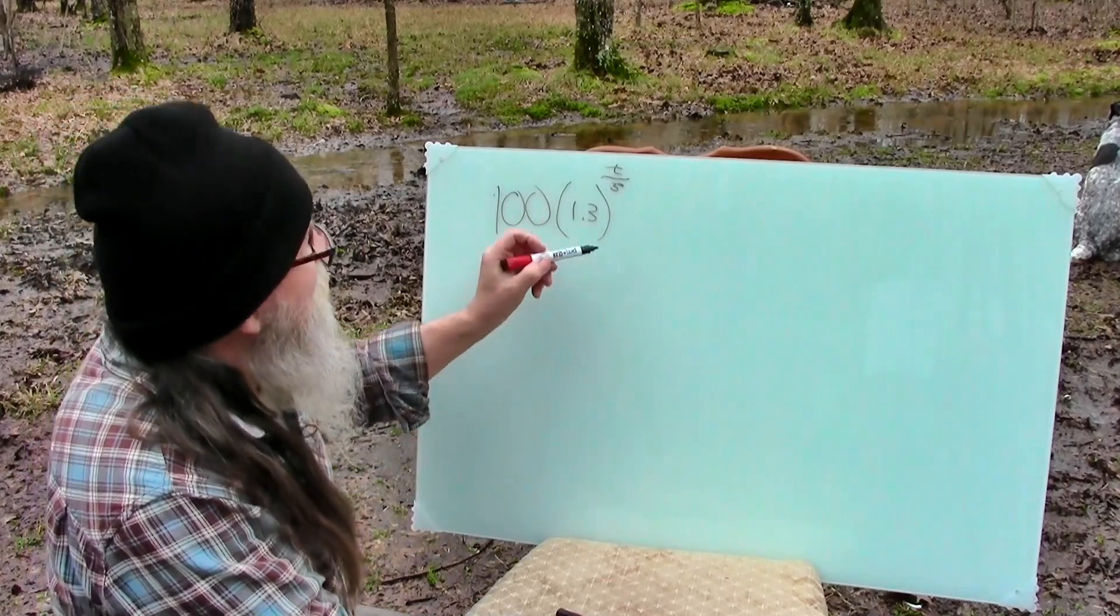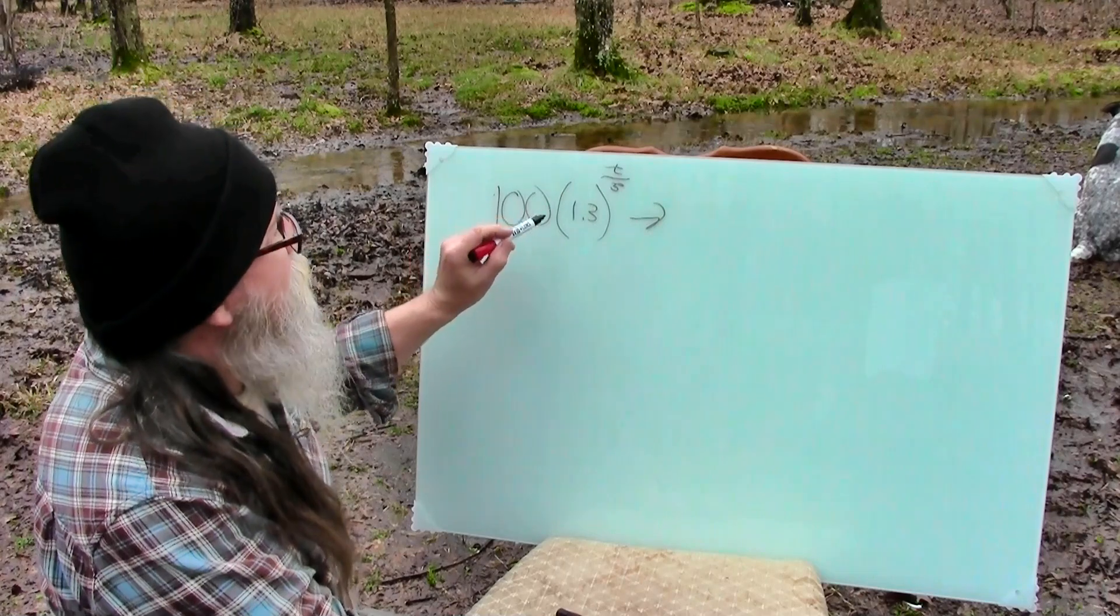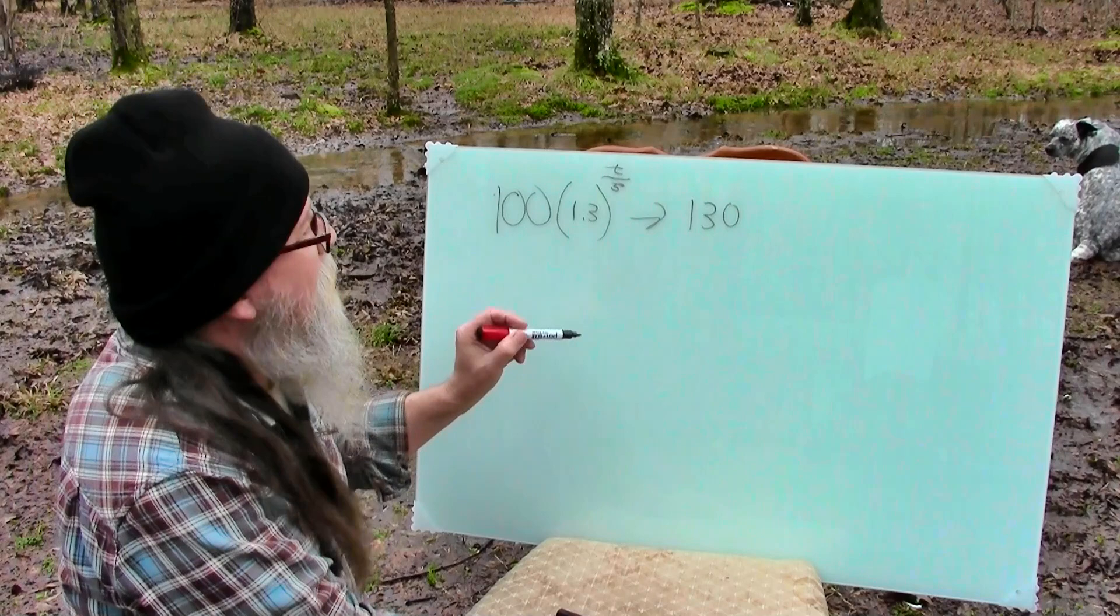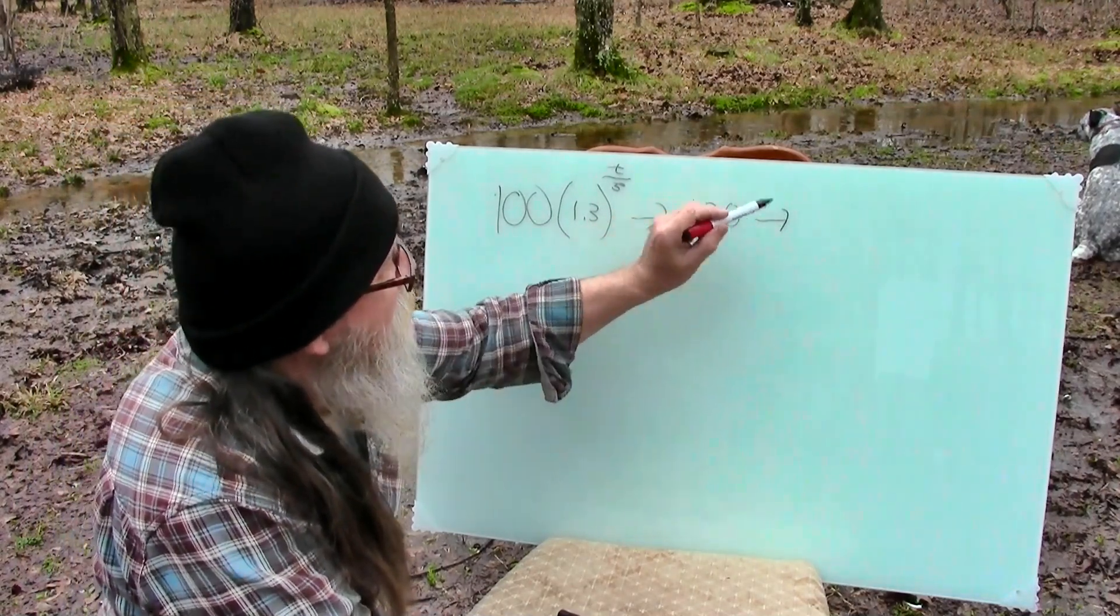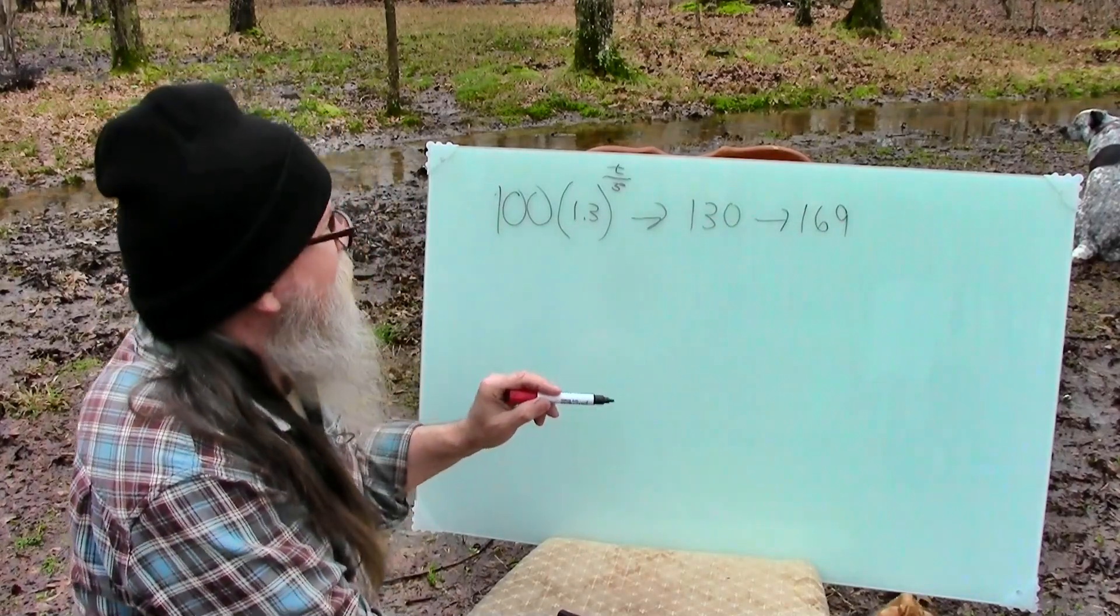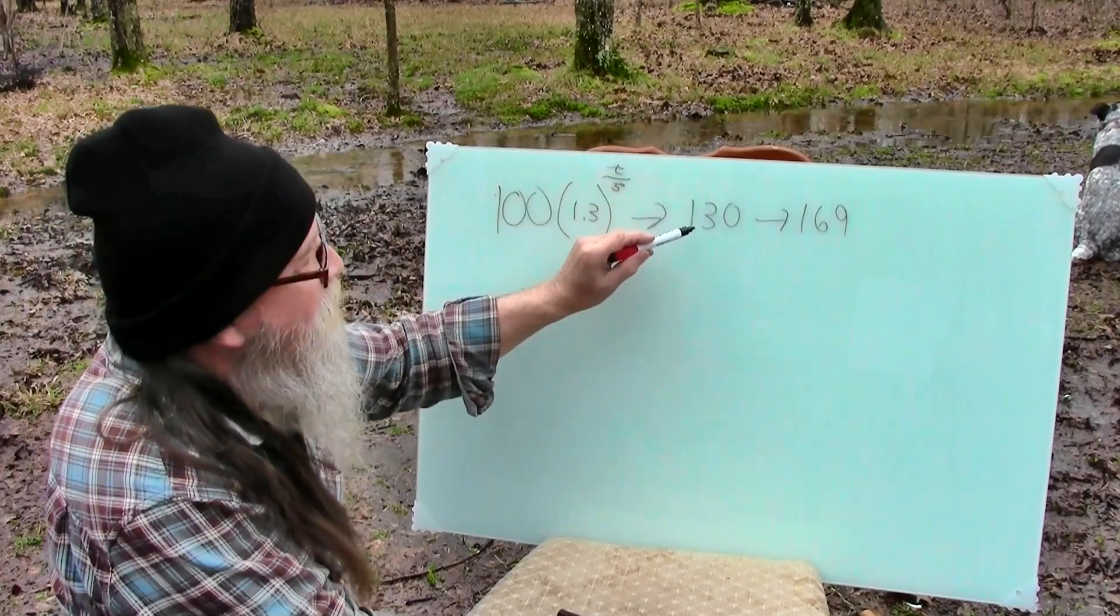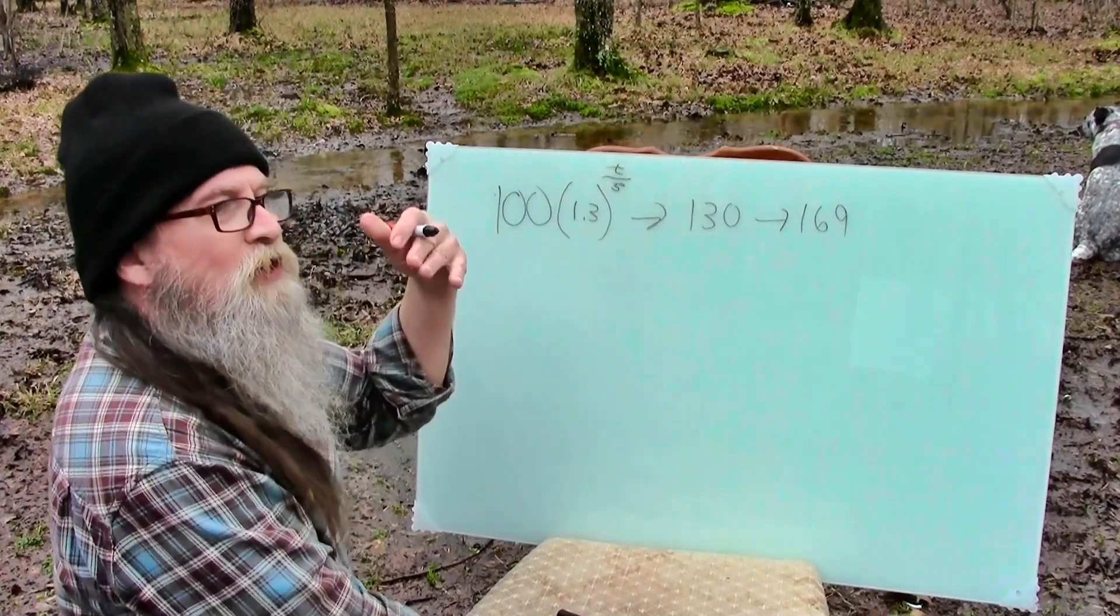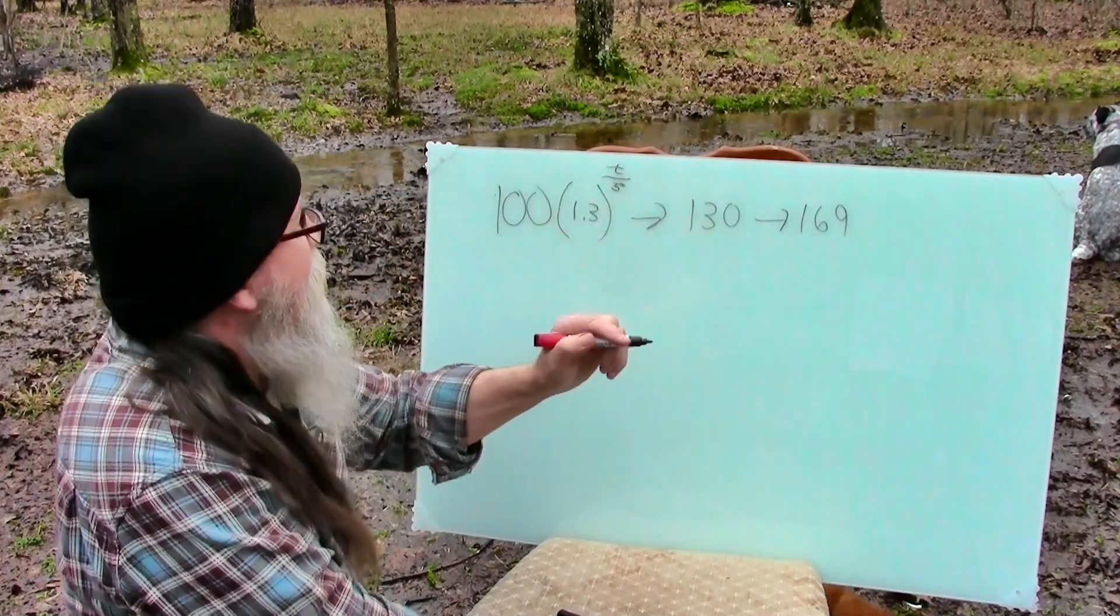And then what that means basically is you start with 100 people. So in five days, you're gonna have 130 sick people. And then in five more days, this 130 people is gonna make 169 people sick. So you start with 100. In five days, you've got 130 new people. In five more days, you got 169 new people. So let's suppose, let's look at 90 days. We're gonna go out three months.